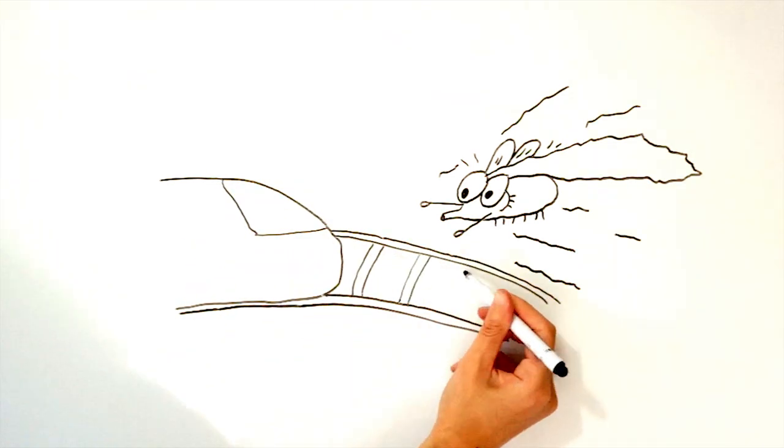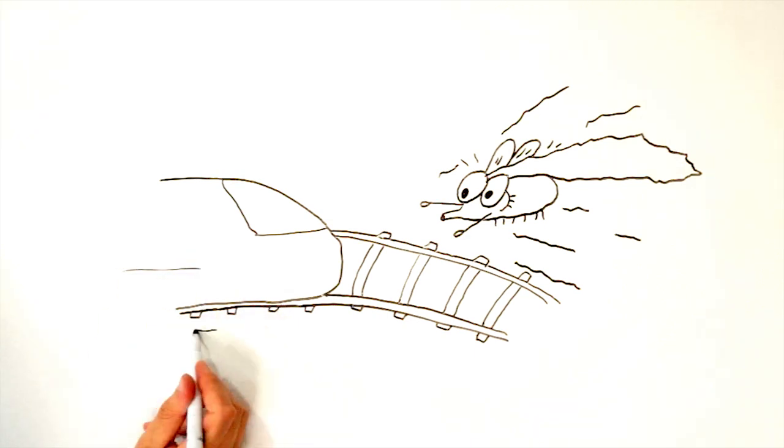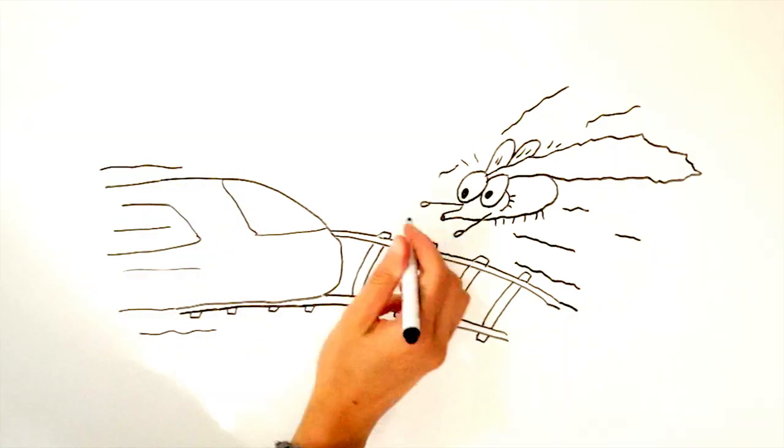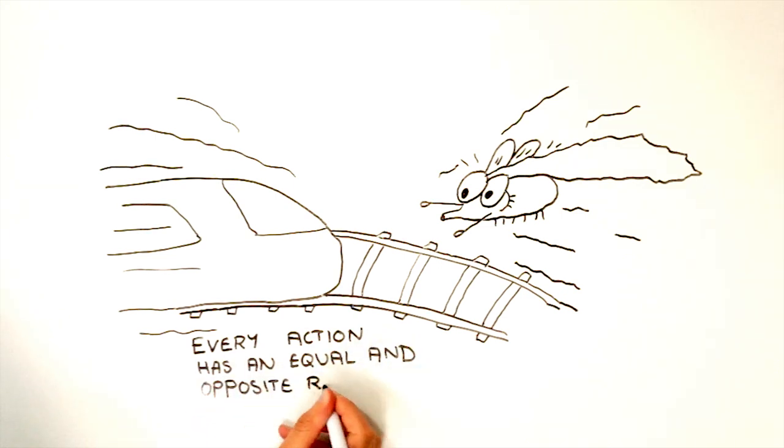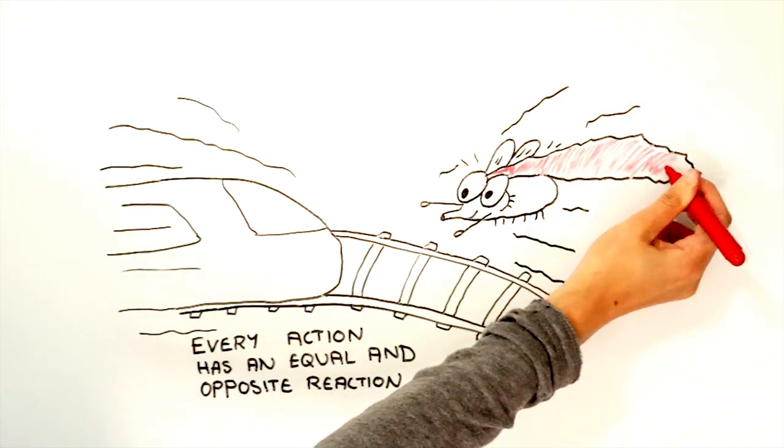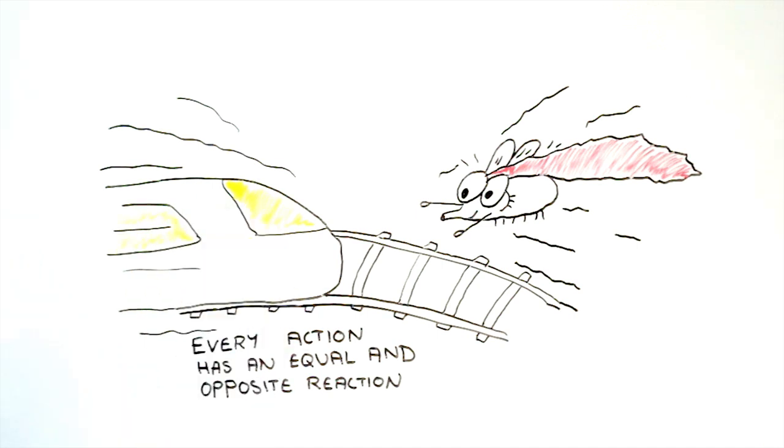If Newton's law is correct, then when a train hits a fly, the fly also hits the train with the same amount of force, which is massive. Being an equal and opposite force, you'd think this would stop the train, or at least cause it to slow down, but we know this doesn't actually happen, and in this video I'll explain why.